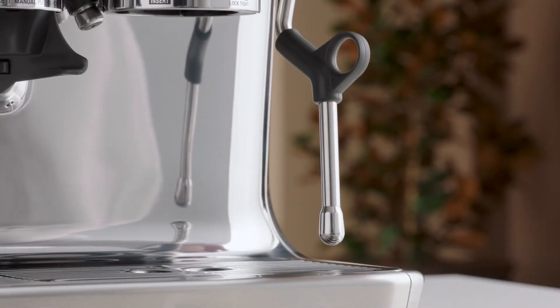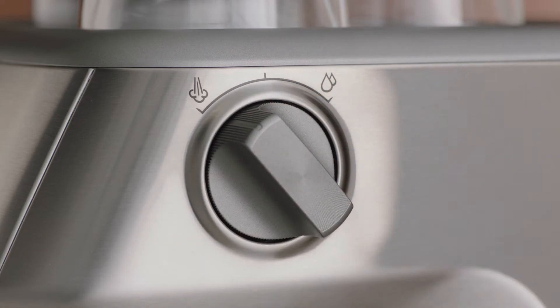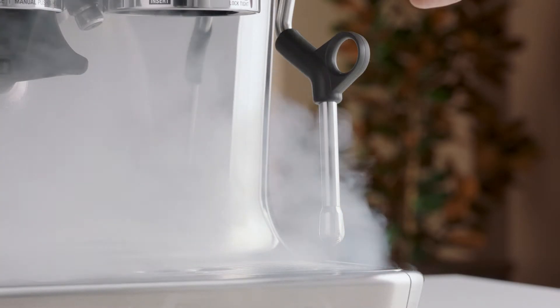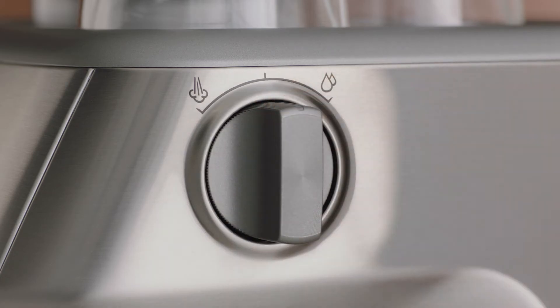Position the steam wand over the drip tray and turn the dial to steam. This will purge out any water that's condensed. Wait until the steam is at full strength, then turn the dial to standby to pause.